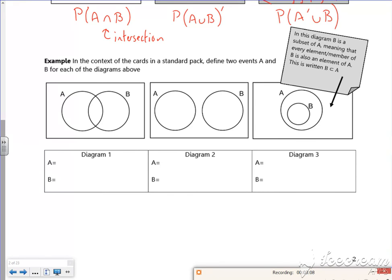It says have a go at some of these, so you can define your own. Let's have hearts for this one and let's have an ace. If A is hearts, I know that all this part, the A bit, is hearts, all 13 of them. Then B is just aces, so this middle bit here must be an ace of hearts. This is all the hearts and this is all the aces.